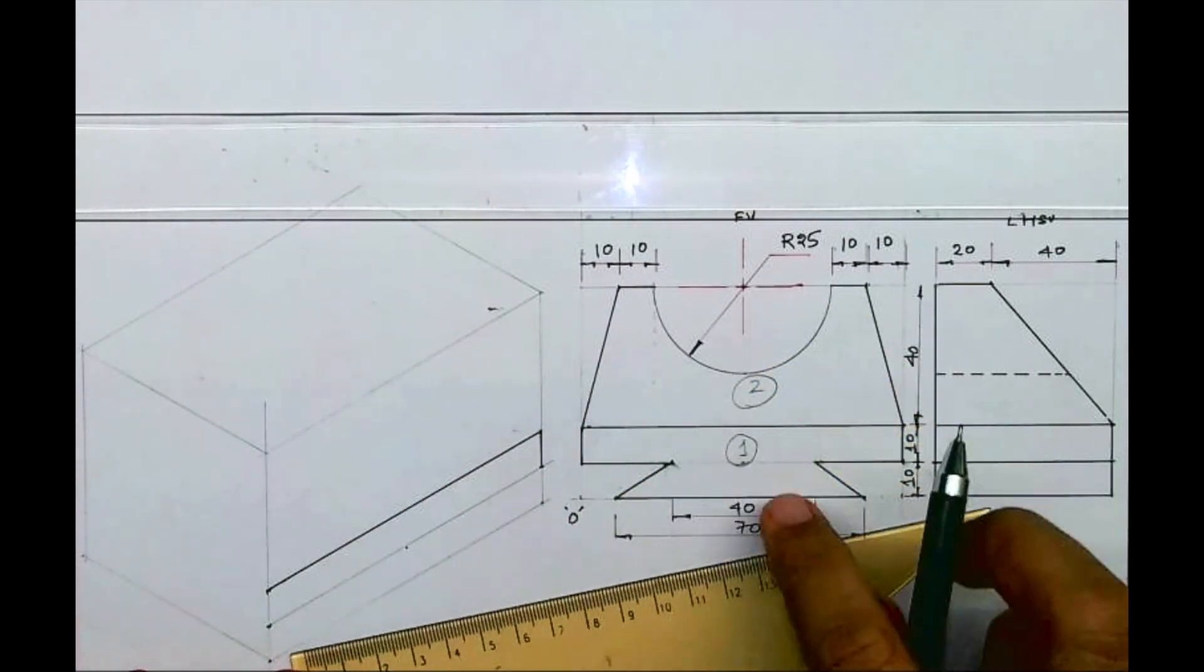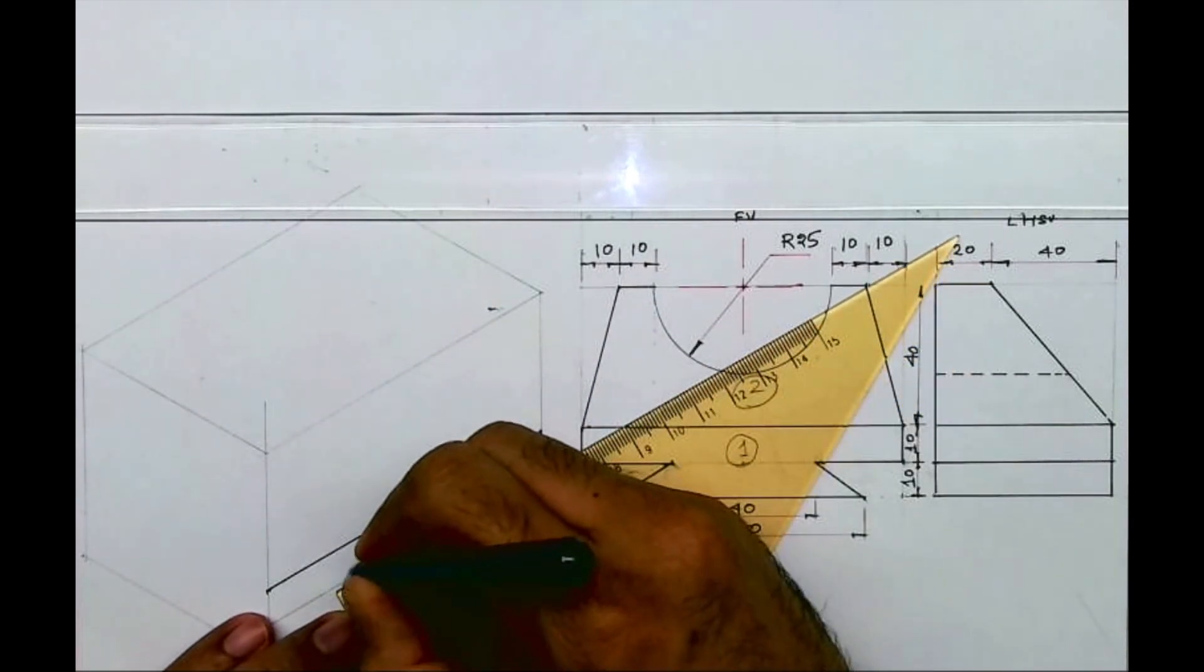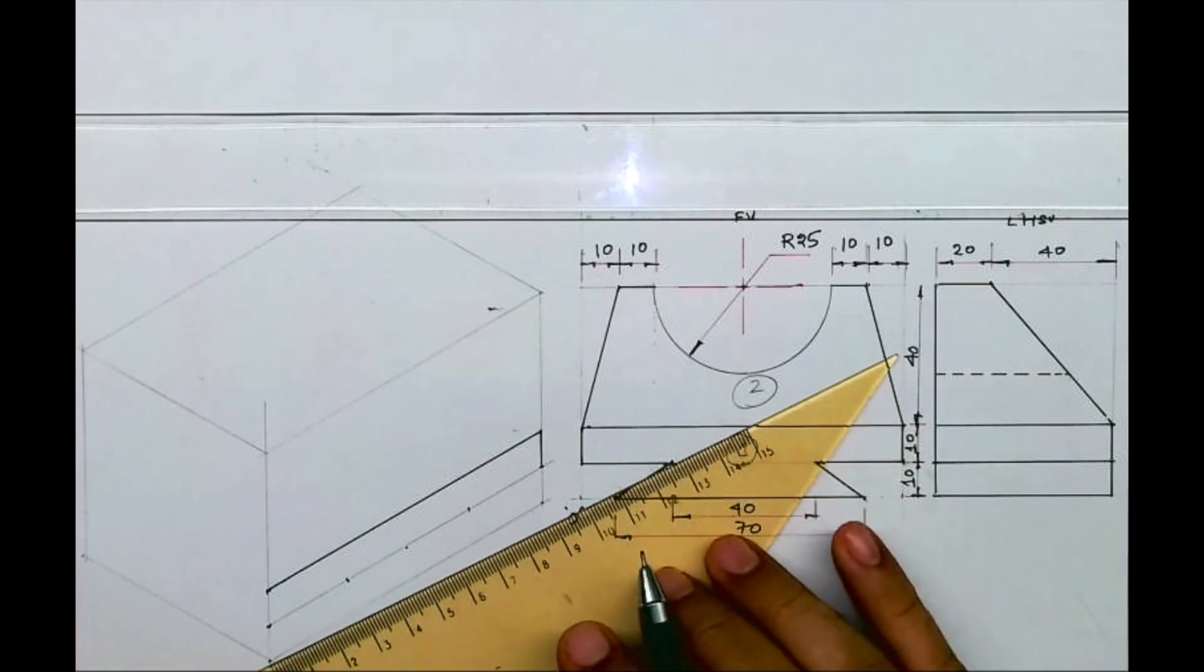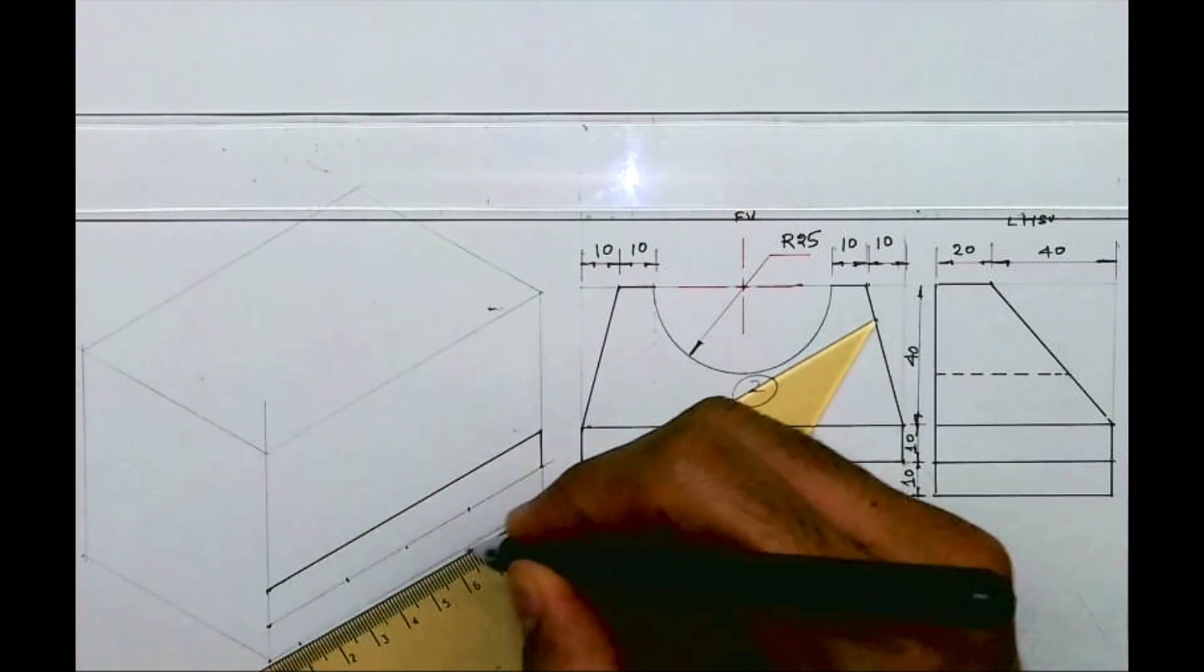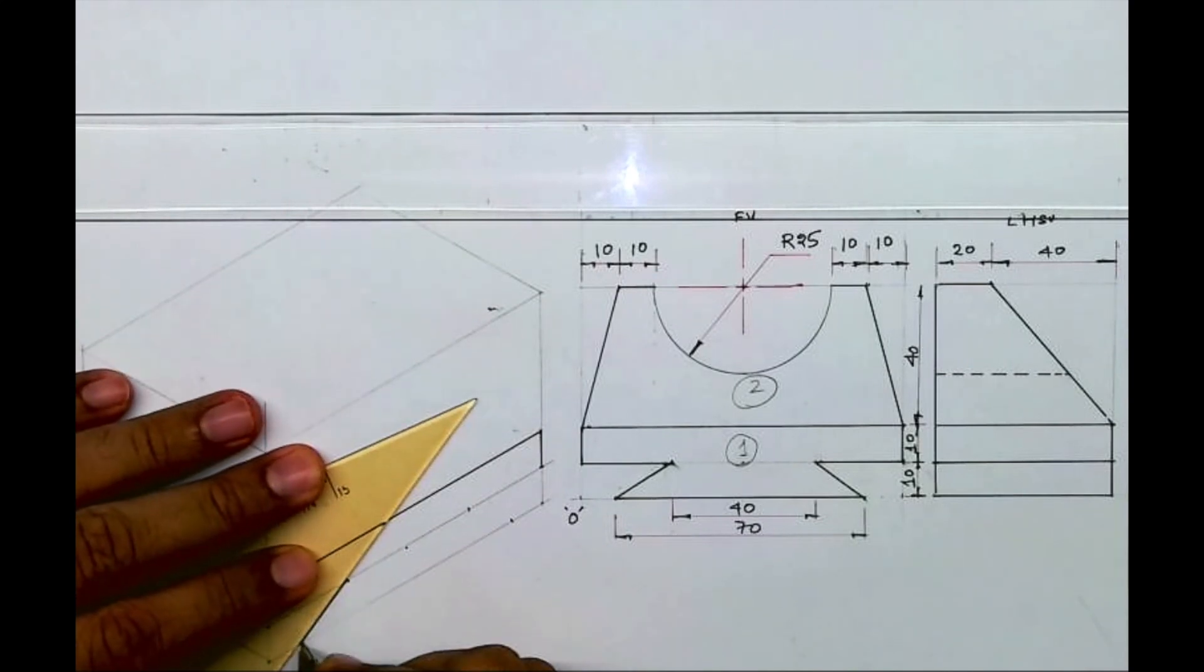Now if you see, you can mark the midpoint and then you can mark 20, 20. And this is 70, so again you take 10, 10 from both sides and you draw part one.